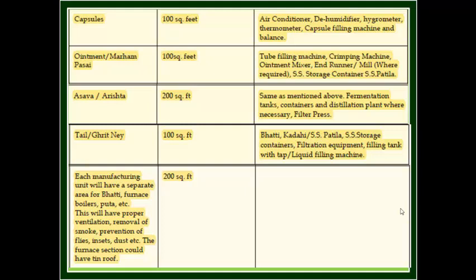Seven: Basic needs — each manufacturing unit will have a separate area for bhatti or furnace or boiler. This will have proper ventilation, removal of smoke, prevention of flies, insects, dust, etc. The furnace section could have a tin roof.